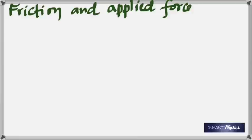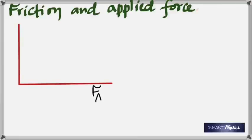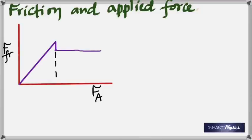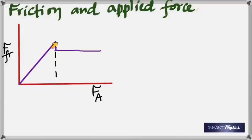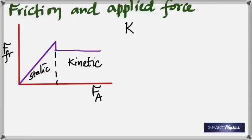Friction changes with applied force. On a graph with applied force on the x-axis and force of friction on the y-axis: initially, as applied force increases, friction also increases and becomes a maximum — that is the limiting friction. Then as motion begins, you see a drop. On the right side is kinetic friction, which is always less than static friction.